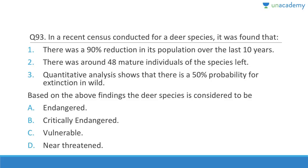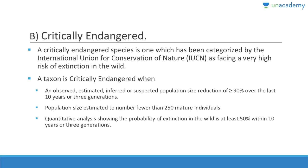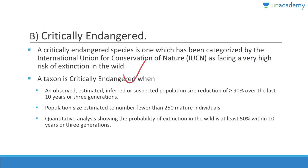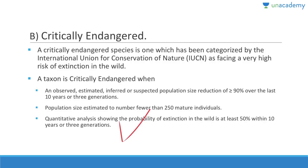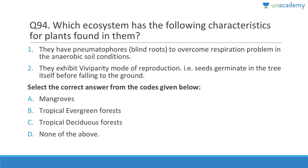Question 93: In a census of a deer species, there was a 90% reduction in population over 10 years, with only 48 mature individuals left and at least 50% probability of extinction in the wild — it is typically critically endangered. If the inferred population size reduction is more than 90% over 10 years or three generations, and population size is less than 250 mature individuals, and at least a 50% extinction chance within 10 years or three generations, then it is critically endangered.